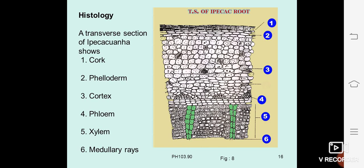Tracheids have pitted walls; vessels are not easily distinguished from tracheids. Xylem parenchyma cells are packed with starch grains, similar to those in the cortex. The medullary rays, indicated with number six, consist of lignified radially elongated cells arranged in radial rows, also filled with starch grains. Notably, there are no vessels or normal fibers in the TS of ipecac drug.